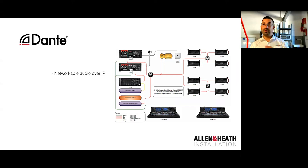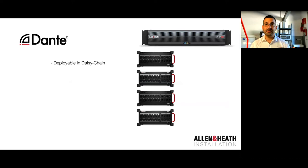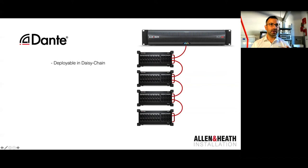There are a couple of different ways Dante devices can be connected together. The first is daisy chain — connecting one unit to the next unit in a chain. This is a really simple way of connecting devices, but it has one major drawback: should any device fail, or should you lose a connection between devices, all following devices then lose their connection and audio, because you've cut the single cable or lost the first box.